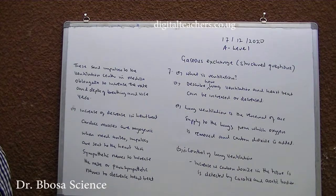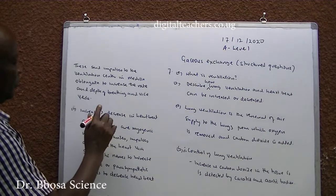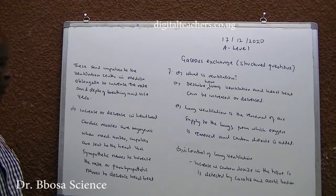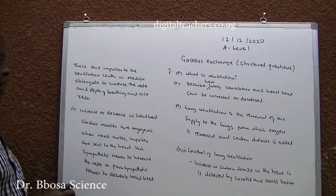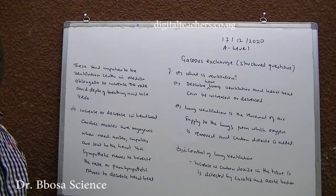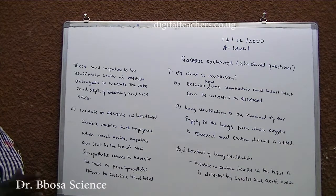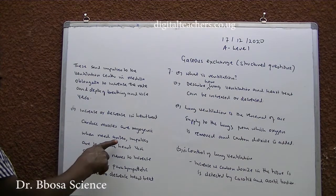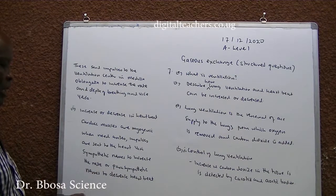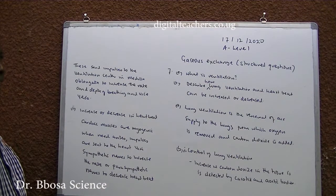Increase or decrease in heartbeat: Cardiac muscles are myogenic, meaning the heartbeat originates from within. When need arises, impulses are sent to the heart via the sympathetic nerve to increase heart rate, or via the parasympathetic nerve to decrease heart rate.